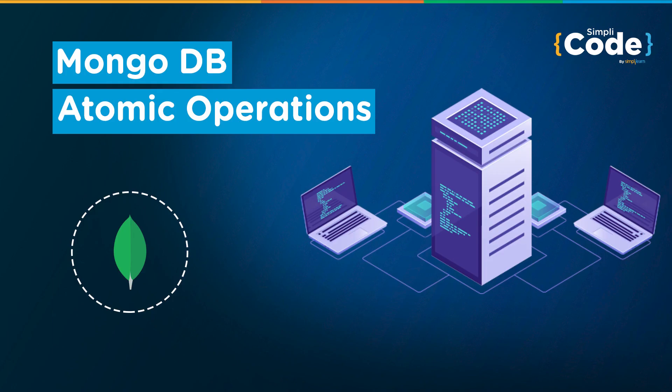Most popular relational databases today support ACID properties. Developers and database administrators who work with relational databases are familiar with ACID behavior properties. However, when working with a NoSQL database such as MongoDB, there are some key differences. MongoDB provides a high level of storage, schema, and scaling flexibility while relaxing some of the ACID properties, so it is important to understand the distinctions as you model your data and execute commands.